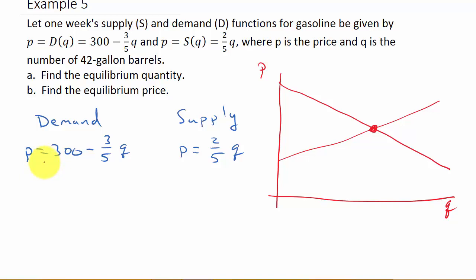How do we find that? We set them equal to each other. So we have 300 - (3/5)Q = (2/5)Q.